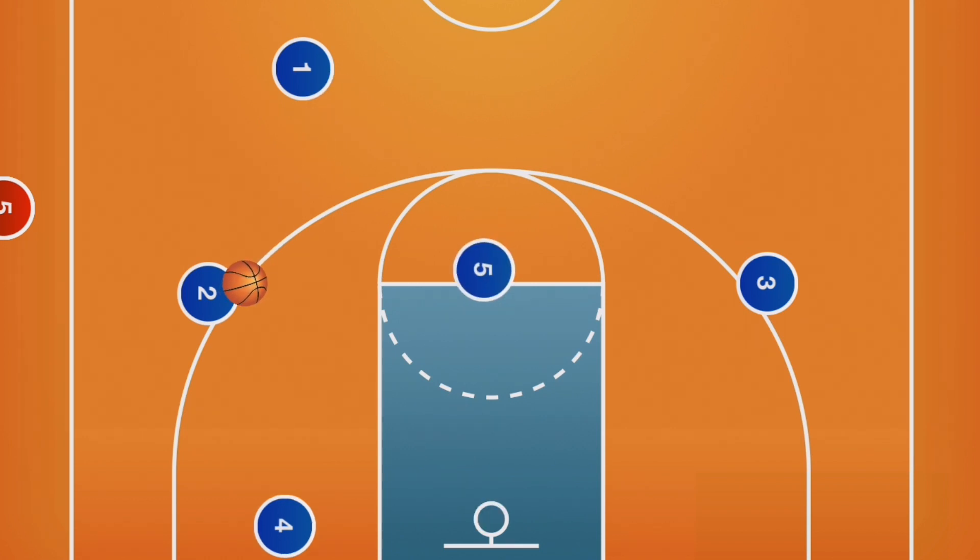The high post's second look is a quick skip pass to the opposite wing. A lot of times, this player will be able to sneak into the gaps and get a good look at an open shot. Remember, you are looking for a gap, not a specific spot on the floor. Find the holes in the defense.